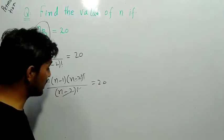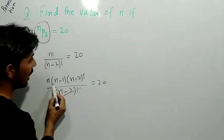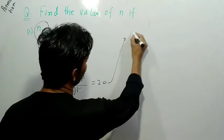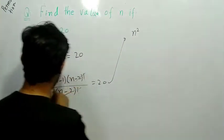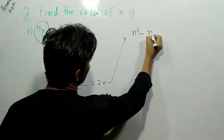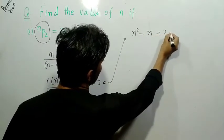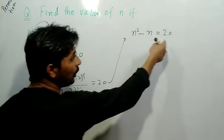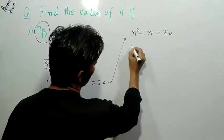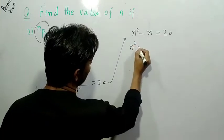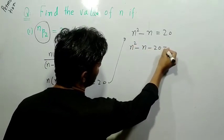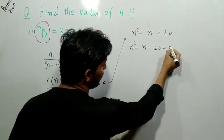So friends, n minus 2 factorial cancel out. In the numerator we have the value n times n minus 1 equals 20. If we multiply, the equation becomes n² minus n minus 20 equals zero. Yes friend.